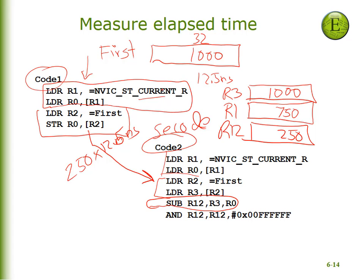The only complicated part is that these are 24-bit measurements stored in a 32-bit register, so the top bits don't make any sense. After I do the subtraction, I will AND it off.